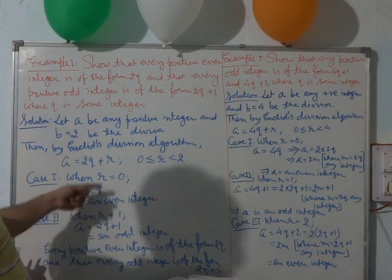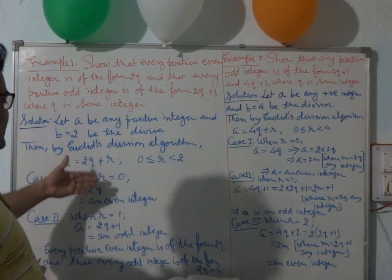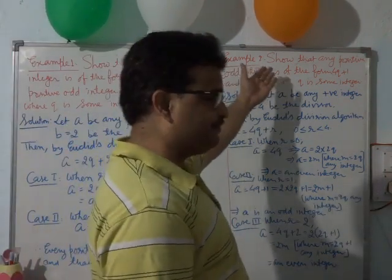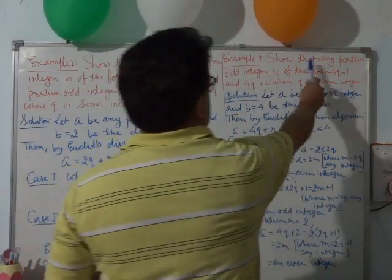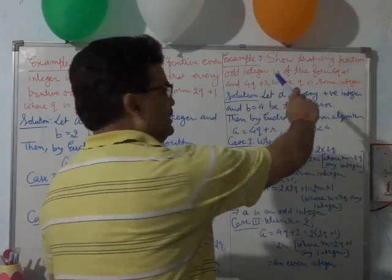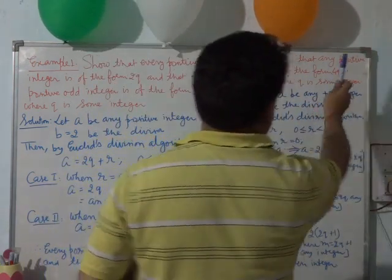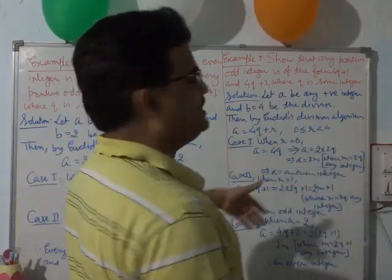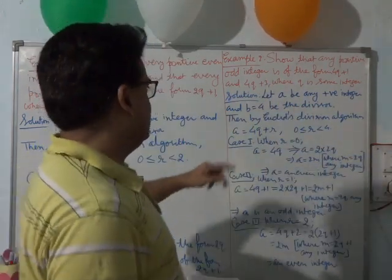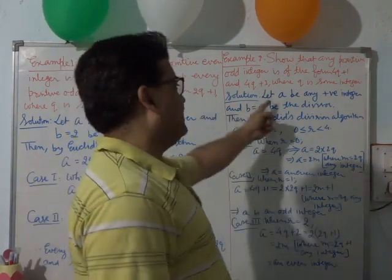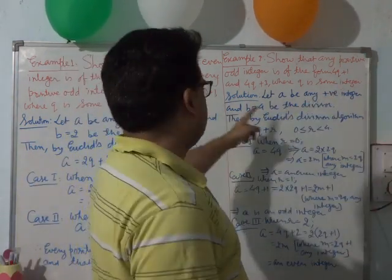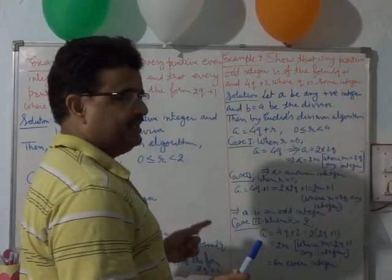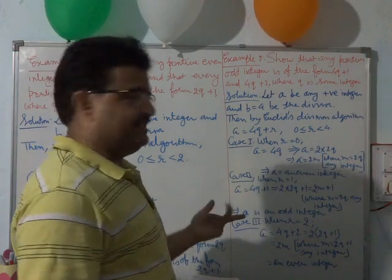This is how Euclid's division algorithm is applied to identify even and odd integers. Let's have another example — Example 2: to show that any positive odd integer is of the form 4q plus 1 or 4q plus 3, where q is some integer. Let A be any positive integer and B equal to 4 be the divisor, because we are taking the format 4q plus 1 and 4q plus 3, so we take 4 as the divisor.